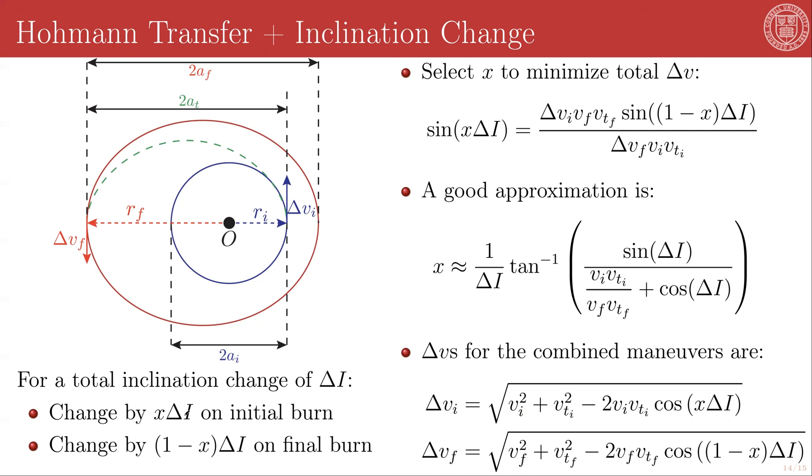So if X is 1, you're doing the full inclination change on the initial burn. If X is 0, then you're doing the full inclination change on the final burn. If X is, for example, 0.5, then you're doing exactly half the inclination change on the initial burn and half the inclination change on the final burn.